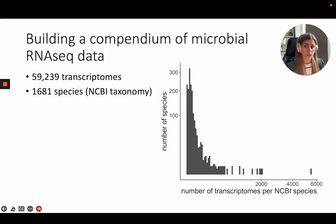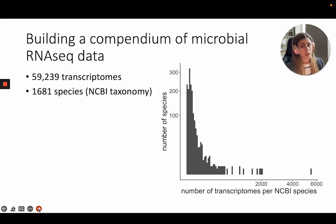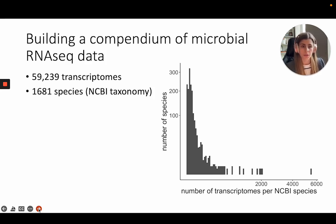That's about 60,000 RNA-seq samples that represent just under 1,700 species. For the majority of species there's usually only a few transcriptomes or RNA-seq samples available, but for some things like E. coli we have many thousands of RNA-seq samples.